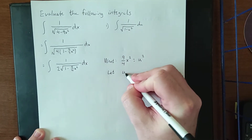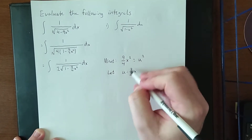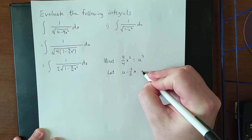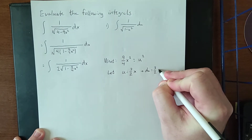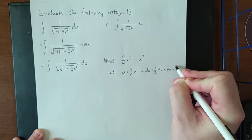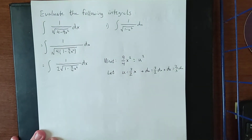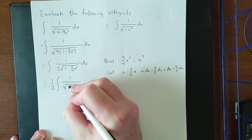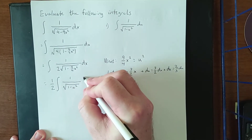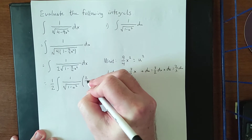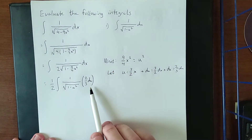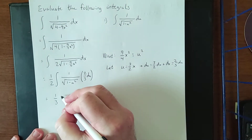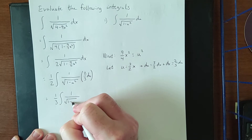For the u-substitution, we let u equal 3/2 x, by taking the positive square root of 9/4 x squared. That gives us du equal to 3/2 dx, or equivalently dx equal to 2/3 du. Substituting in: we keep the 1/2 outside, replace the expression under the radical with 1 minus u squared, and replace dx with 2/3 du. Combining 1/2 and 2/3 gives us 1/3, leaving us with 1/3 times the integral of 1 over the square root of 1 minus u squared du.